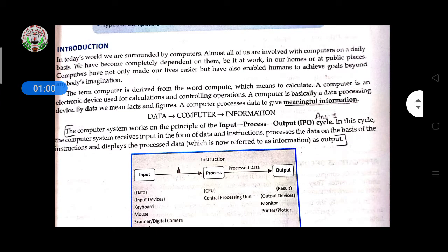What is computer? The term computer is derived from the word compute which means to calculate. The computer is an electronic device used for calculation and controlling operations. A computer is basically a data processing device.